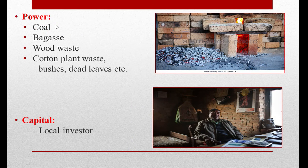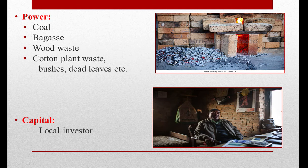Power or fuel used includes coal, bagasse, wood waste, cotton plant waste, bushes, and dead leaves. Bagasse is the byproduct of sugarcane — after crushing or extracting juice from sugarcane, the leftover is called bagasse, which is used as fuel to fire the bricks in the brick kiln industry. Capital is the money invested in a business, and usually local investors invest in brick kiln industries in Pakistan.